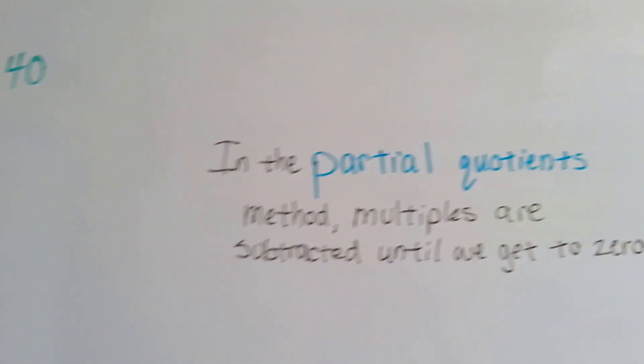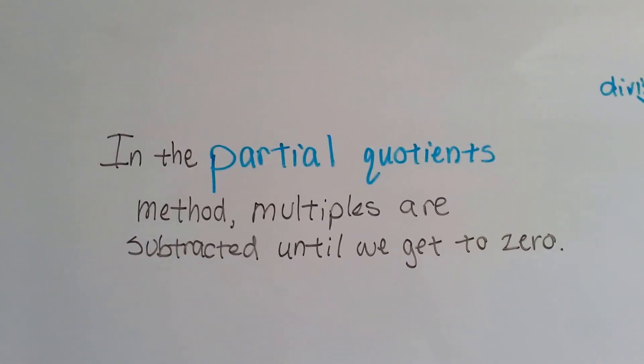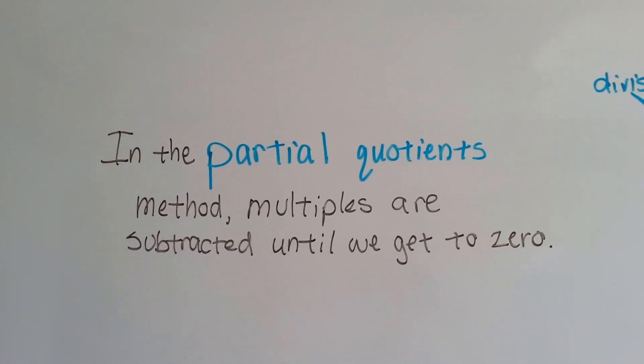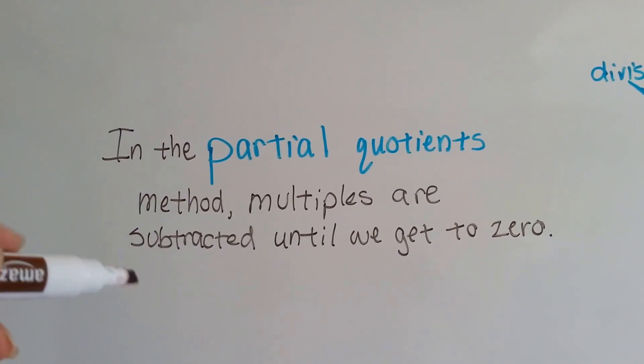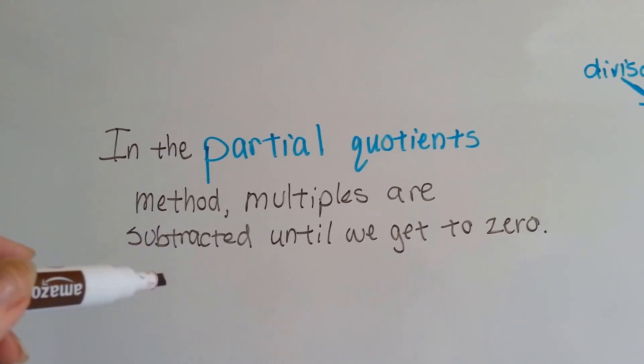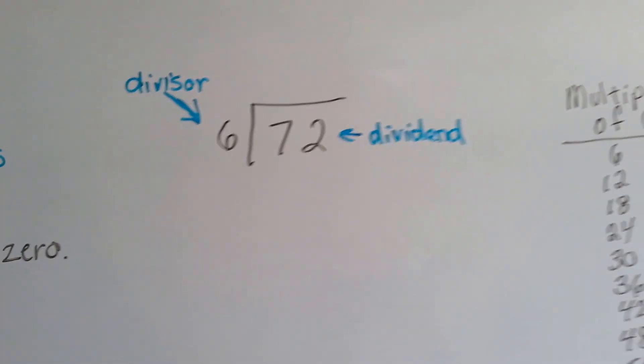Okay, well, let's see if we can remember what partial quotients are. It's a method where you take multiples and we subtract them until we get to zero, okay? So, you remember what multiples are?